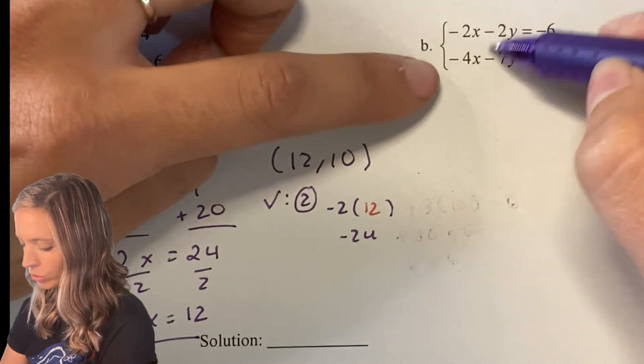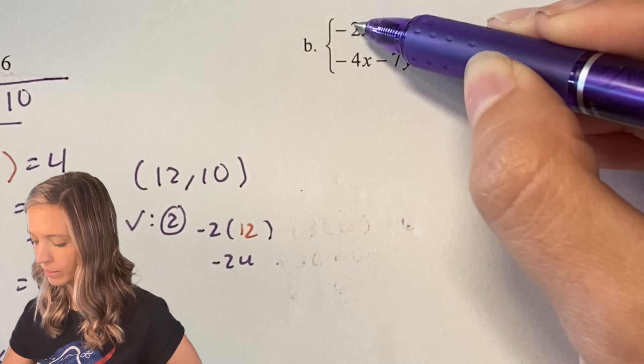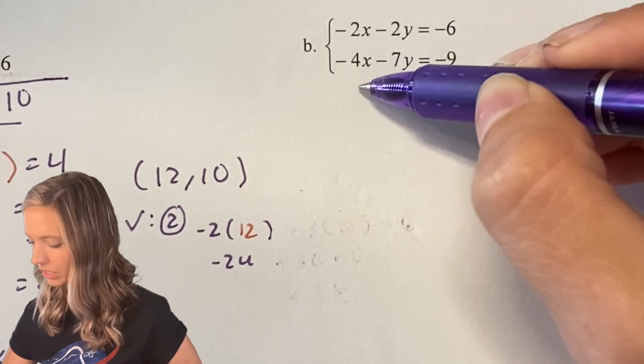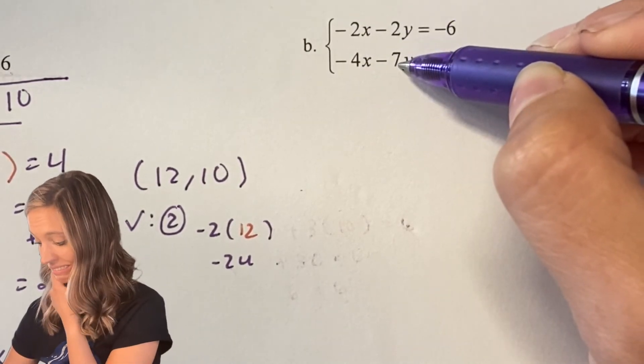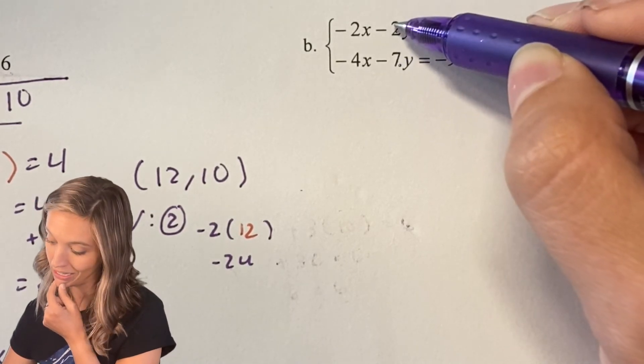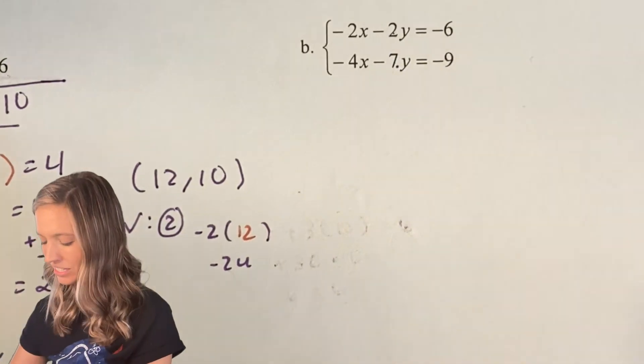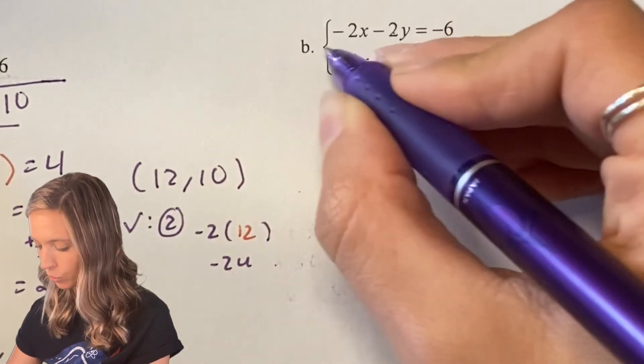So this is where I'm going to have to play with the equation a little bit. Which variable could I multiply by something and make it eliminate with the other variable? 2 and 4, well, if I multiply 2 times 2, I can make it a 4 so those would eliminate. So let's just stick with multiplying the first equation.